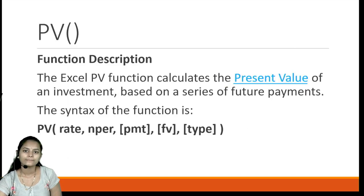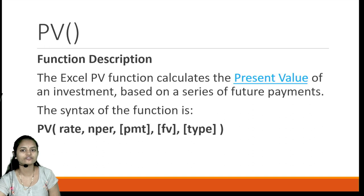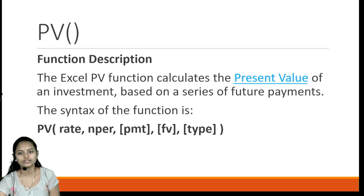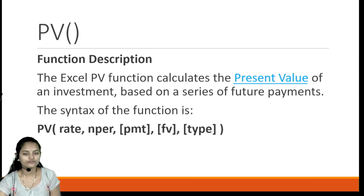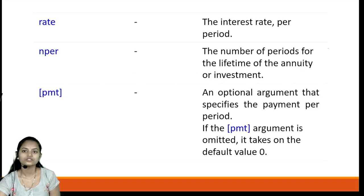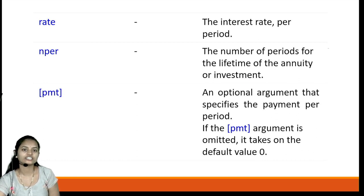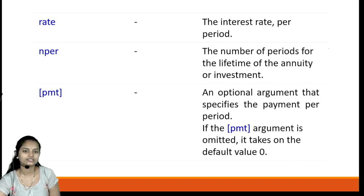Next is the PV function — Present Value. This Excel PV function calculates the present value of an investment based on a series of future payments. The syntax is PV, and in the brackets we specify parameters: rate, nper, pmt, fv, and type. Rate is the interest rate; nper is the number of periods for the lifetime of the annuity or investment. PMT is again an optional argument — if no value is provided, it defaults to zero.